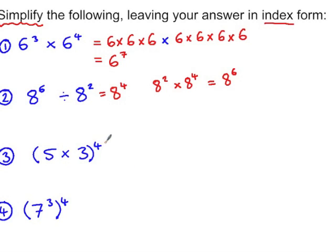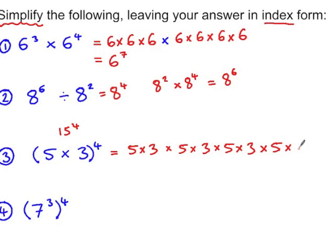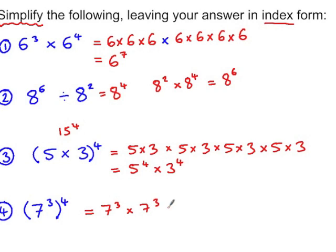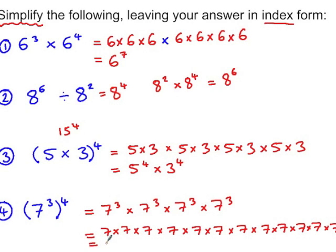In example three, five times three to the power of four can be expanded by writing five times three, times five times three, times five times three, times five times three. Grouping the fives and the threes gives five to the power of four multiplied by three to the power of four. So when multiplying two numbers to a power, we can write them separately raised to that power and multiply them. Finally, seven cubed to the power of four means seven cubed times itself four times, which gives seven to the power of twelve — when raising a power to another power, we multiply the indices.